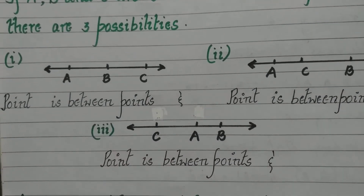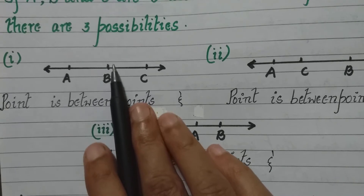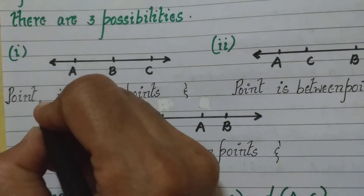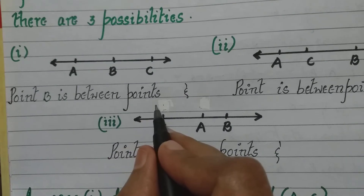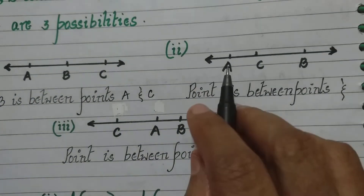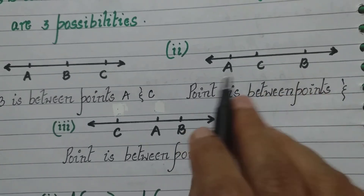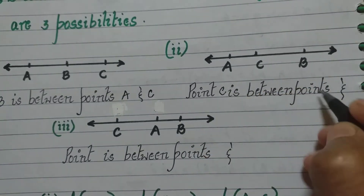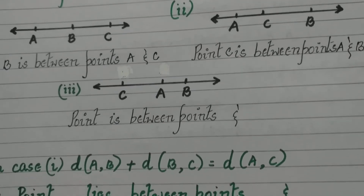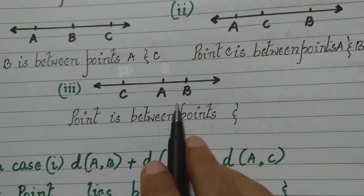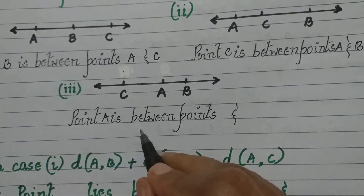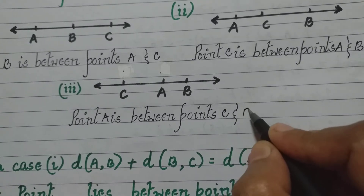In the first example, point B is lying between points A and C — so we write: point B is between points A and C. In the second example, point C is lying between points A and B. And in the third example, point A is lying between points C and B — so point A is between points C and B.